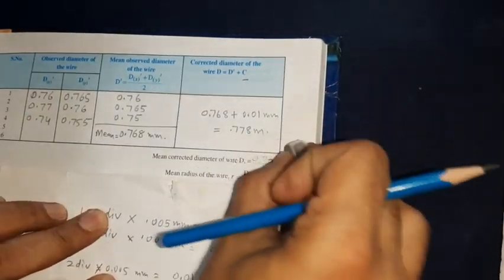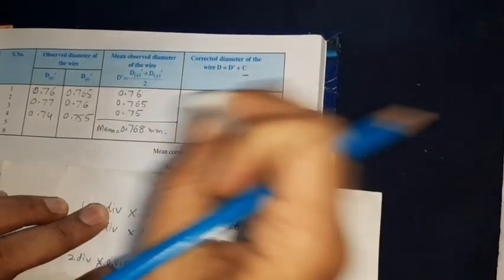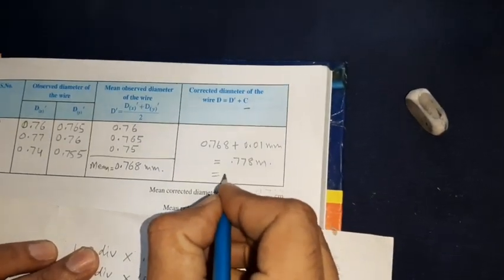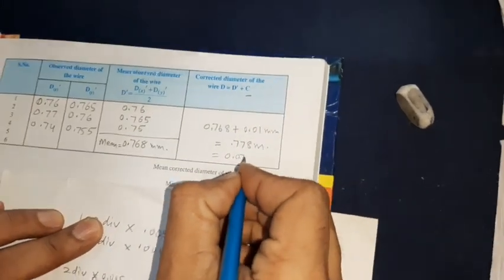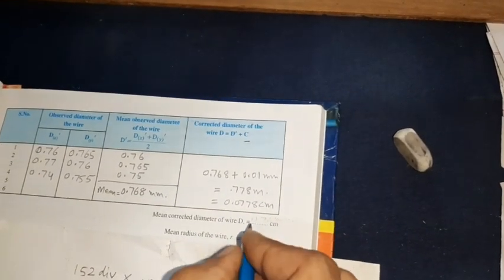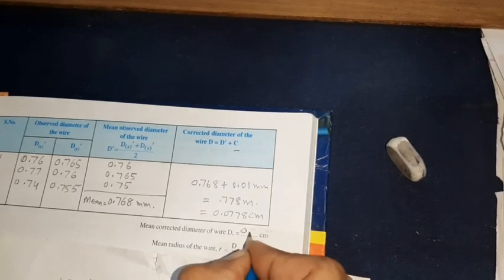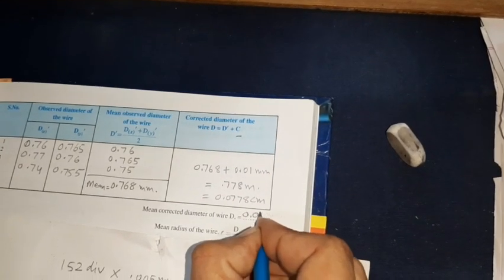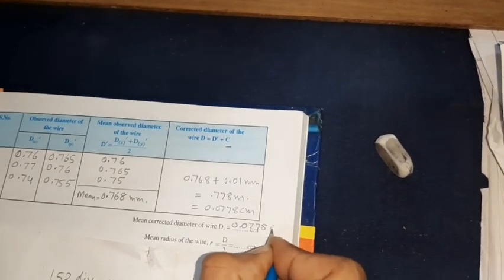Now we have to take the reading in centimeters. This will be equal to 0.0778 centimeters. So now the corrected diameter of our wire is 0.0778 centimeters.